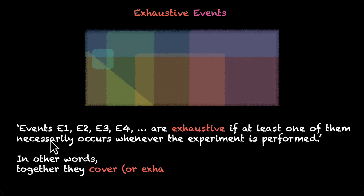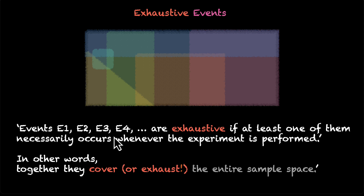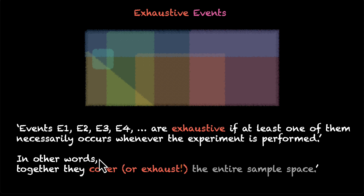And this is what you'll see in your textbooks. Events E1, E2, E3, E4 and so on are exhaustive if at least one of them necessarily occurs whenever the experiment is performed. In other words, together they cover or exhaust the entire sample space. So that's the definition of exhaustive events.